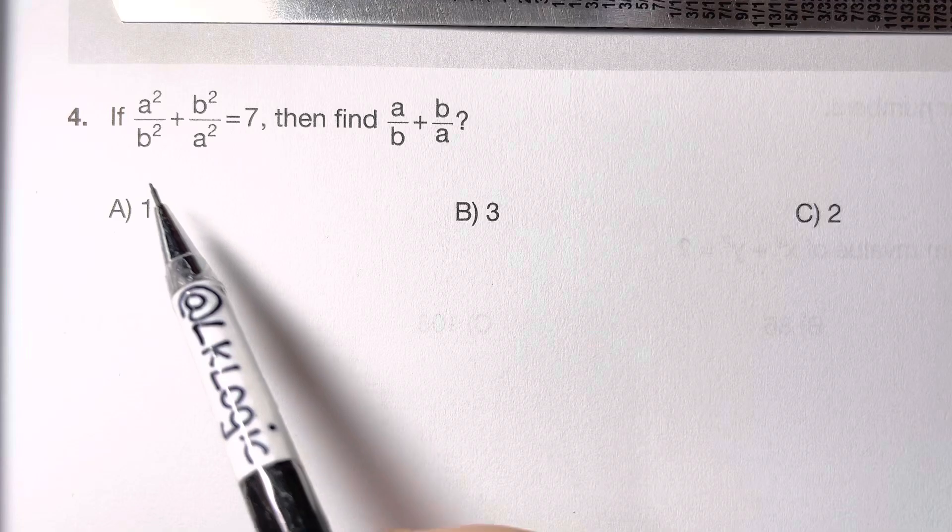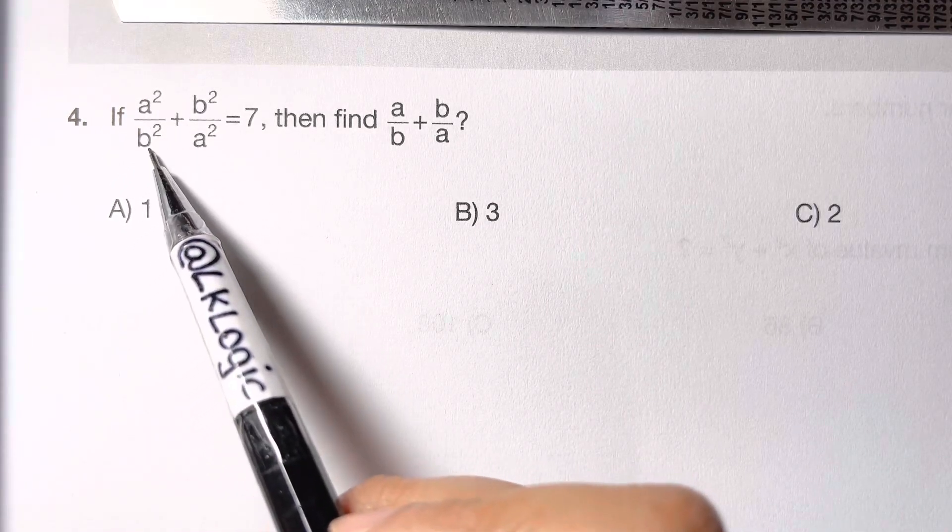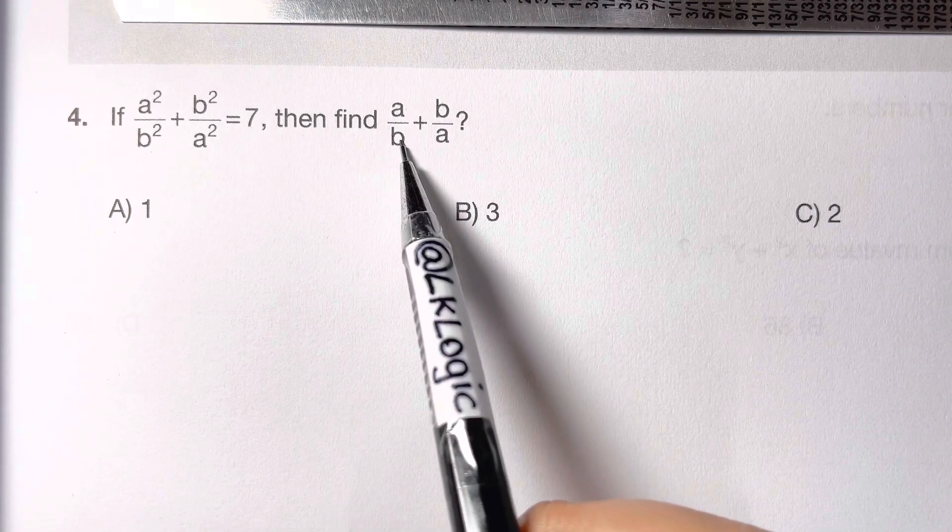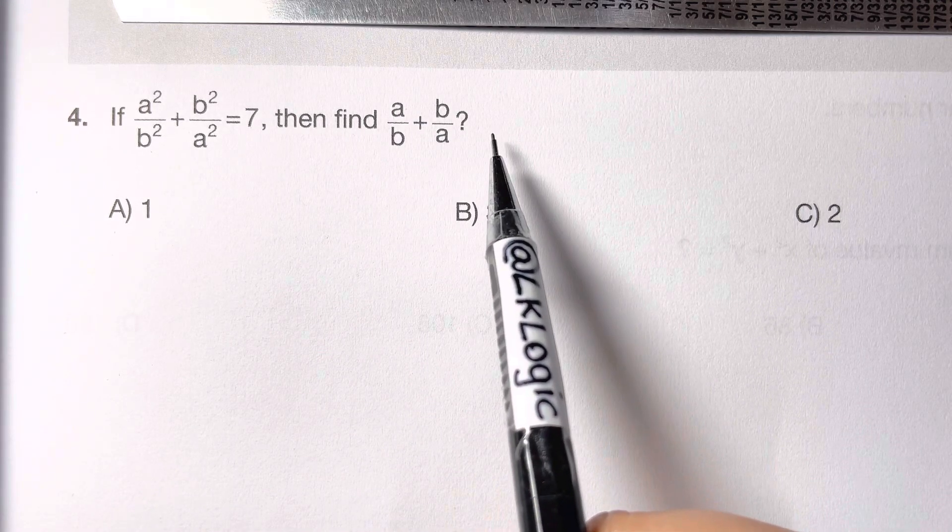Here you are with the question: if a² over b² plus b² over a² equals 7, then find a over b plus b over a. What is it?